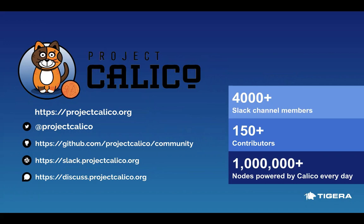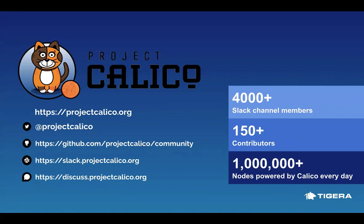We're also on Twitter at Project Calico. If you have questions or need help with your Kubernetes cluster, specifically with Calico, or just want to follow along and see what everybody else is doing, you can join us on Slack or Discord at slack.projectcalico.org or discuss.projectcalico.org. There are probably 4,000 to 5,000 different Kubernetes operators on our Slack, with different channels for different topics, and a lot of our engineering team is in there throughout the day answering questions.